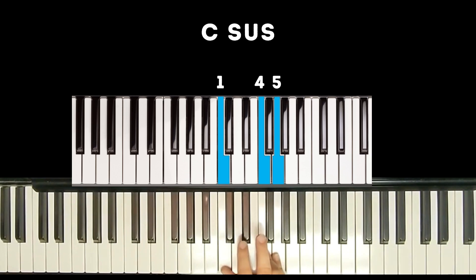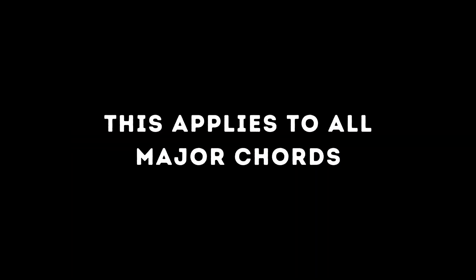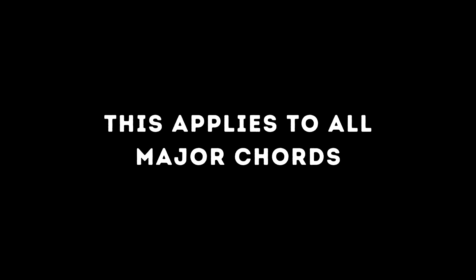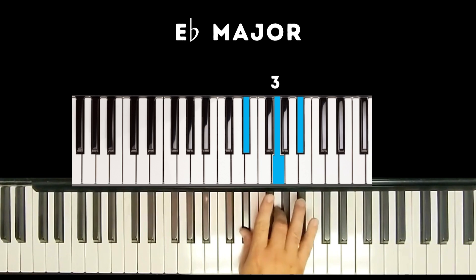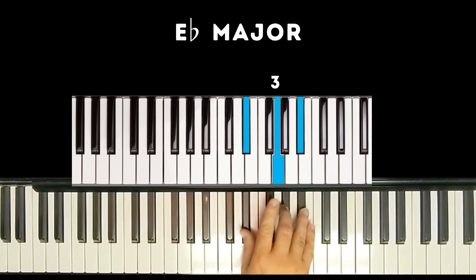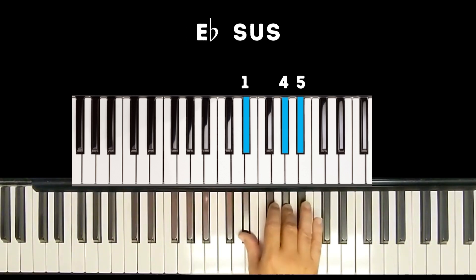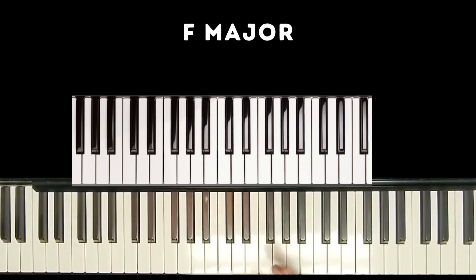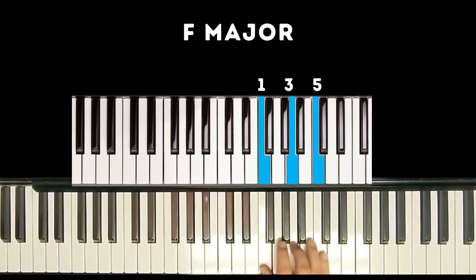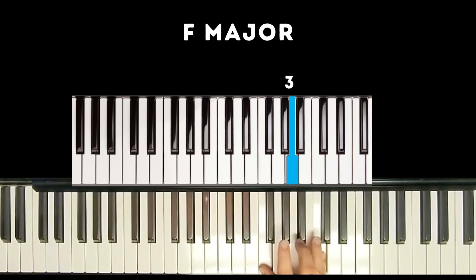We have raised the third one half step. This applies to all major chords. If it's E-flat major, we just take our third and raise it a half step, so instead of one, three, five we have one, four, five. If it's F major, instead of one, three, five, we take the third and raise it a half step.